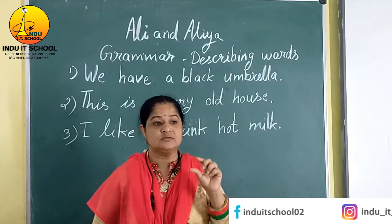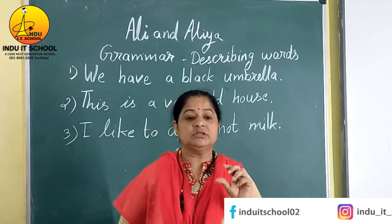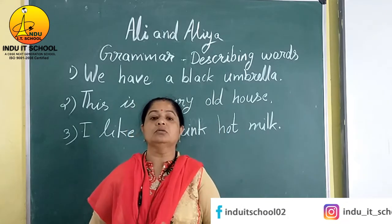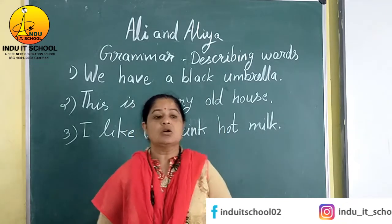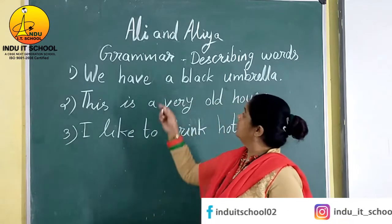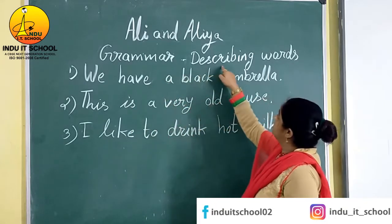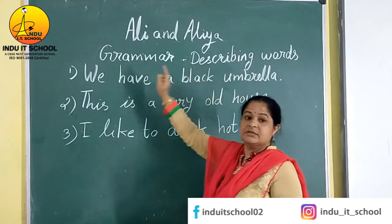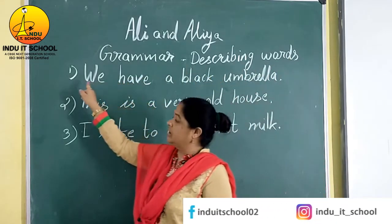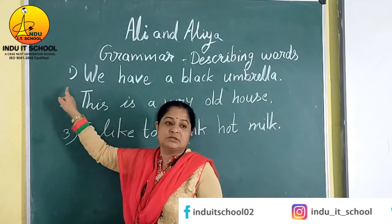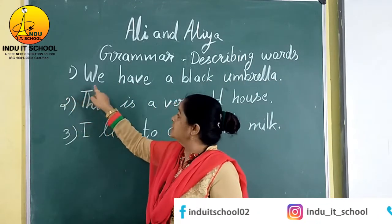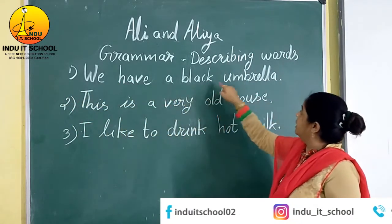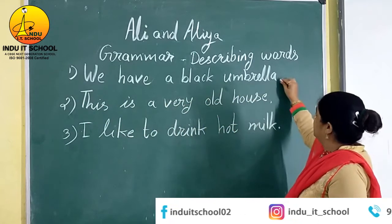So these words which are telling us more about the noun, that is called the describing words. We have some examples here. First, we have a black umbrella.